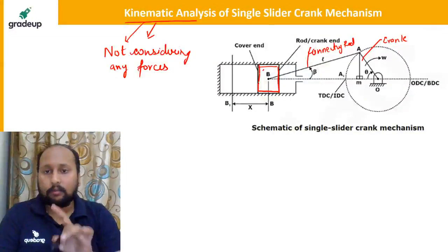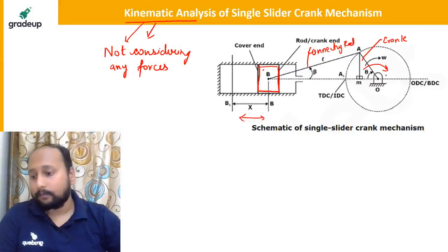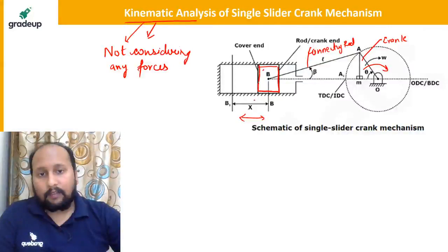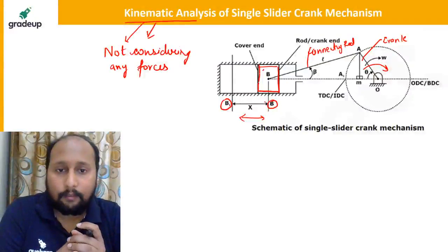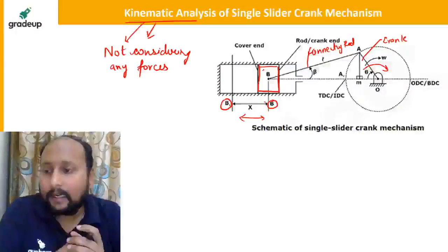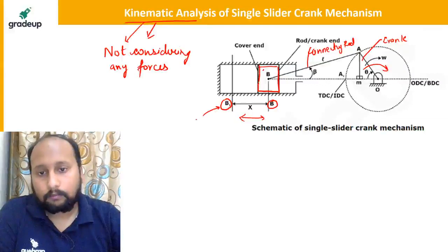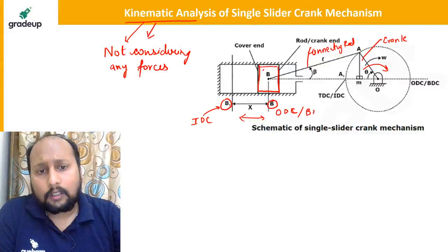In a single slider crank mechanism, we are converting reciprocating motion into rotational motion — that's your IC engine — or rotational motion into reciprocating motion. The two extreme points of the slider are B1 and B. B1 is the inner dead center (IDC) and B is the outer dead center (ODC), also known as bottom dead center and top dead center in vertical engines.